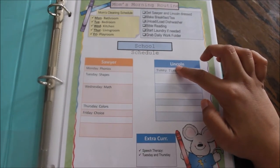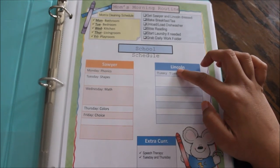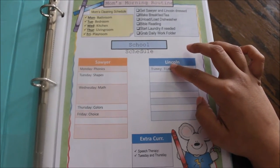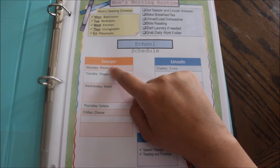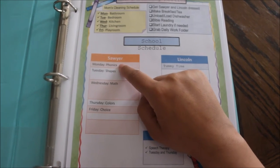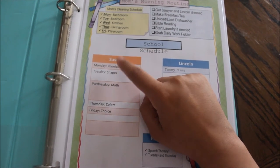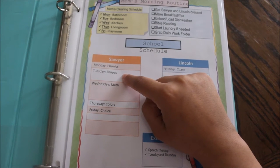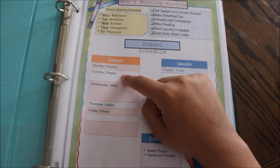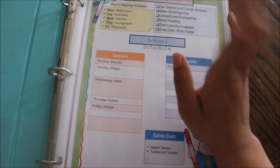Lincoln has tummy time during school, which lasts about probably twenty minutes or so. And then here's Sawyer. Monday, he works on phonics. So the alphabet this week is the letter A. Tuesday is shapes. We don't have a shape of the week, we kind of just work with all shapes.